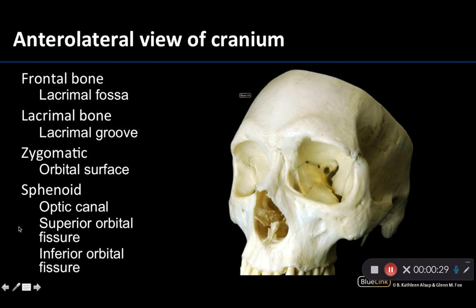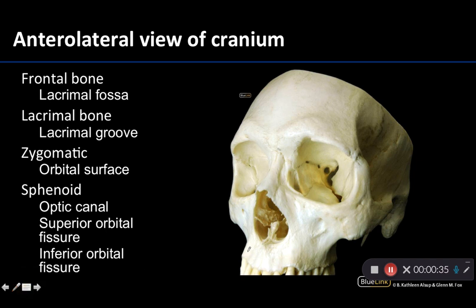Let's start with this particular view — this anterior lateral view of the cranium. You can see a bit better of the medial portion of the orbit when you're looking at this anterior lateral view.